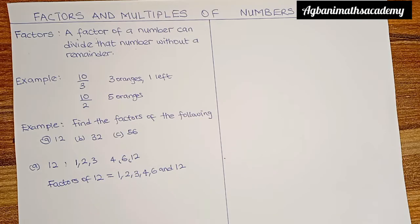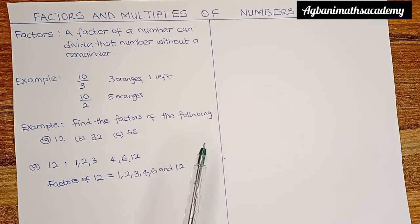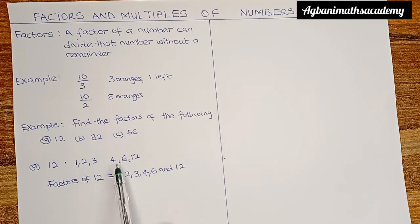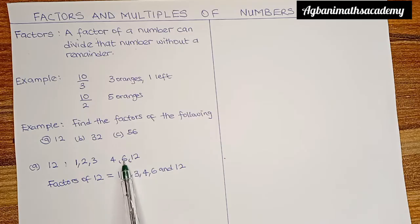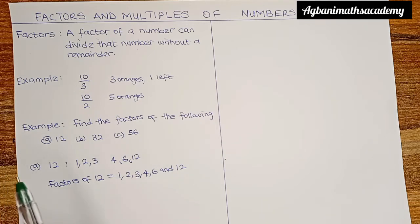What did we learn from this? First, every number has 1 as its smallest factor and the number itself as its largest factor. Second, when finding factors in between, we move from 1 and try 2, then 3, then 4, until we get to half of the number. Once you reach half of the number, there is no other factor between the half and the number itself. So let's look at the second example, B.